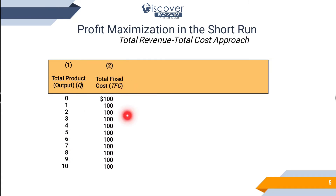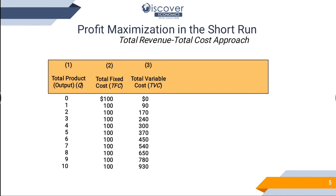Fixed costs are the same for every level of production. You know that fixed costs for any company or any production house are fixed — we don't have to change them. But variable costs increase with every new unit of production.